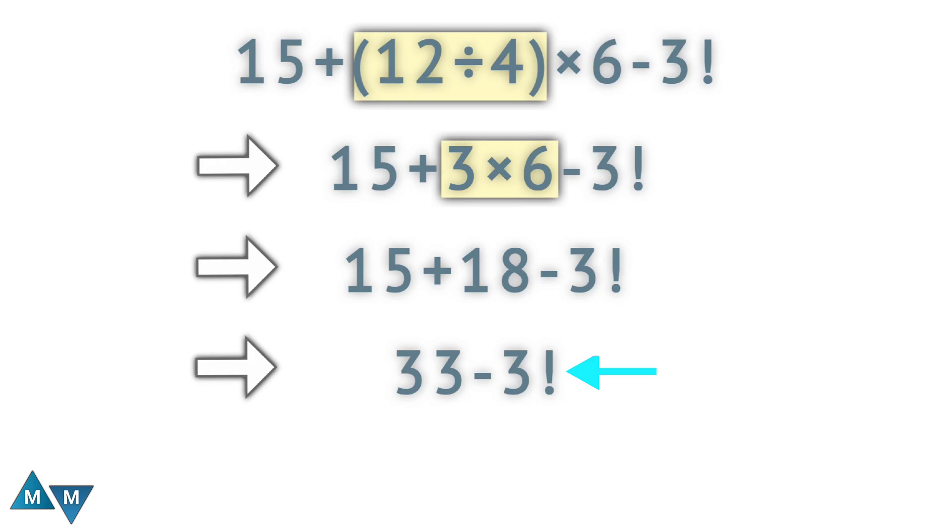How do you calculate a factorial? You take a number and multiply its predecessors until you reach 1. So 3 factorial equals 3 times 2 times 1, which gives 6.